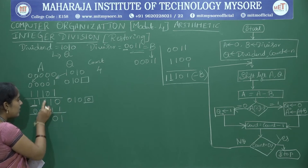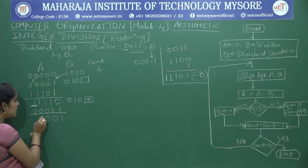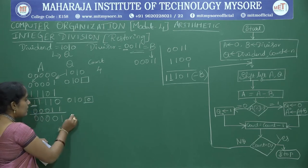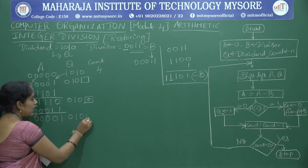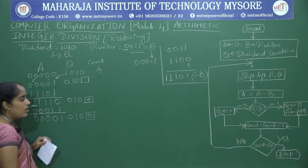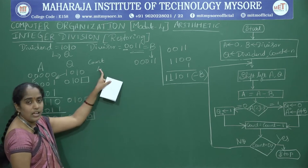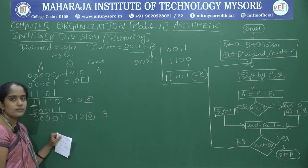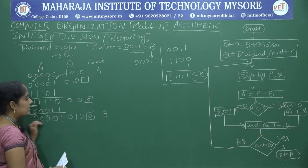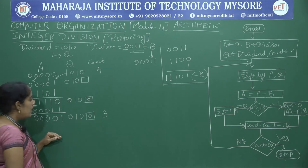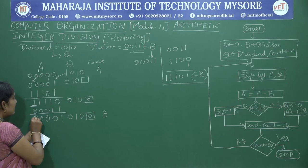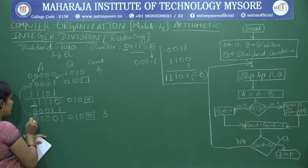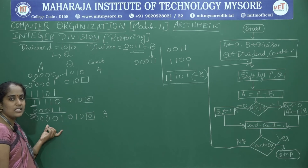The result of restoration is 00001, with Q showing 0100. Decrement count: count is now 3. The A value is restored to what it was before subtraction — that's why it is called the restoring algorithm. Cycle 1 is complete.